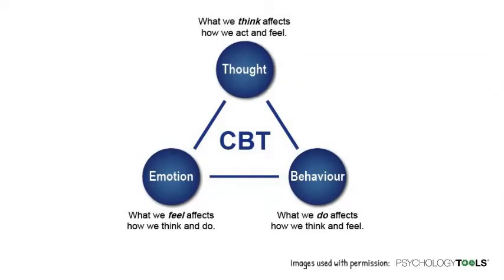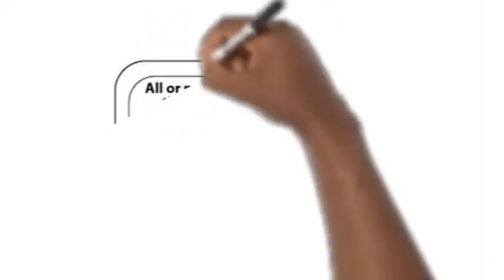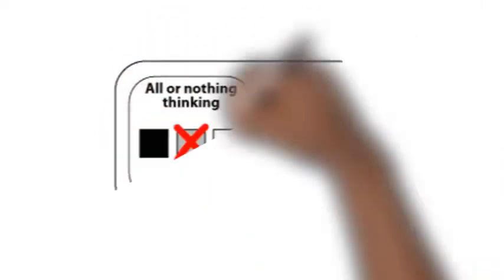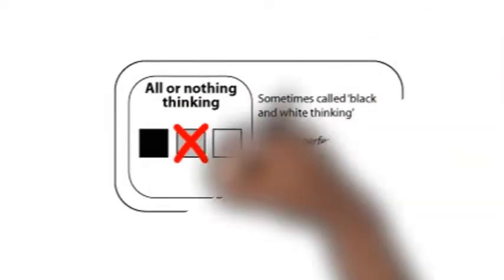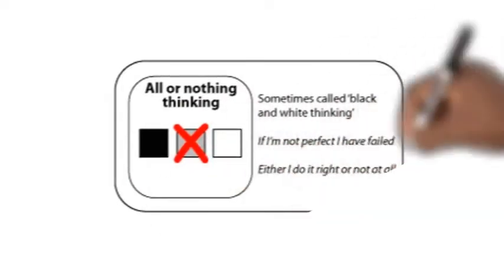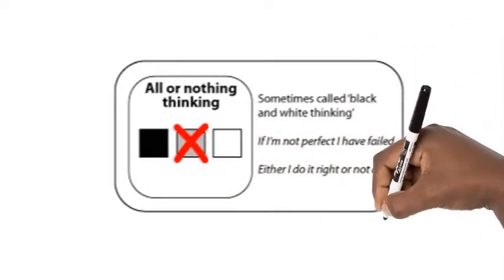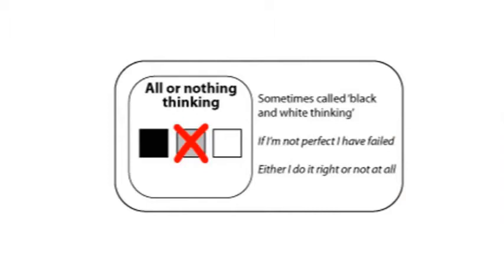Adam might be struggling with all-or-nothing or black-and-white thinking, leaving him unable to find the middle ground where the realistic truth usually resides. He might tell himself 'My responses need to be perfect or they are terrible.'